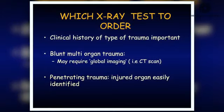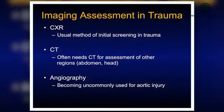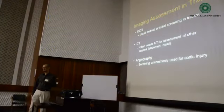Which x-ray to order? The history decides. If there is blunt and multi-organ trauma, you may require global imaging — that would be a CT scan. In penetrating trauma, the injured organ is more easily identified. Chest x-ray is the usual method of initial screening. CT is used when the abdomen or head is involved. Angiography is becoming less commonly used for aortic injury, because CT scan can demonstrate it well enough.